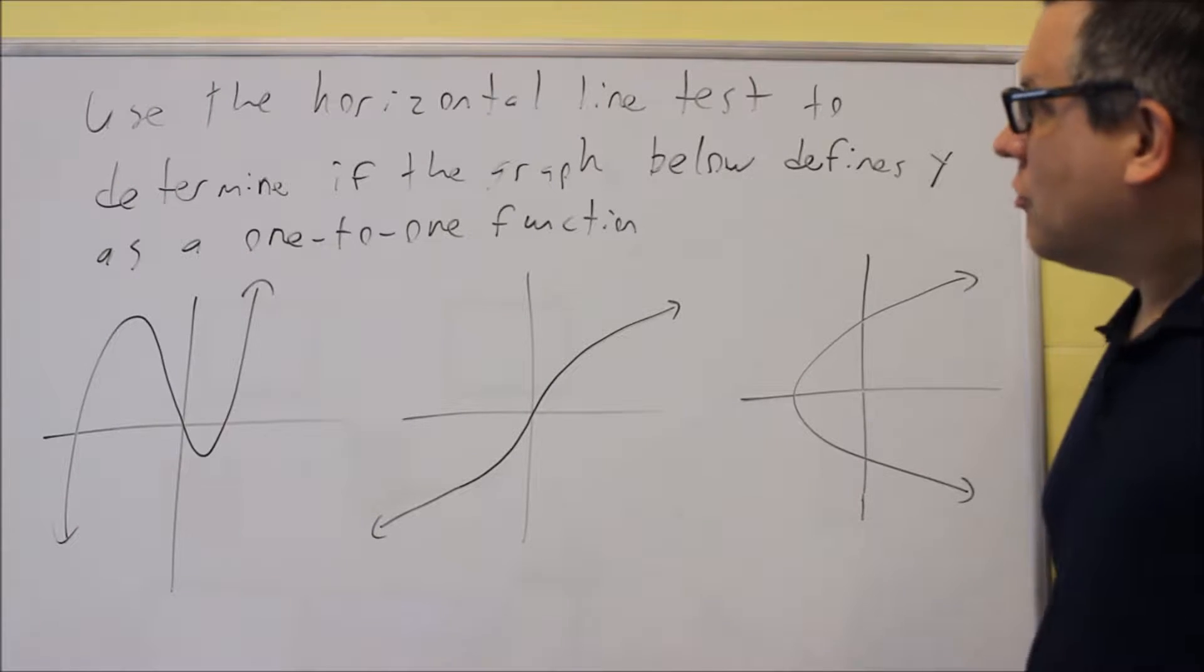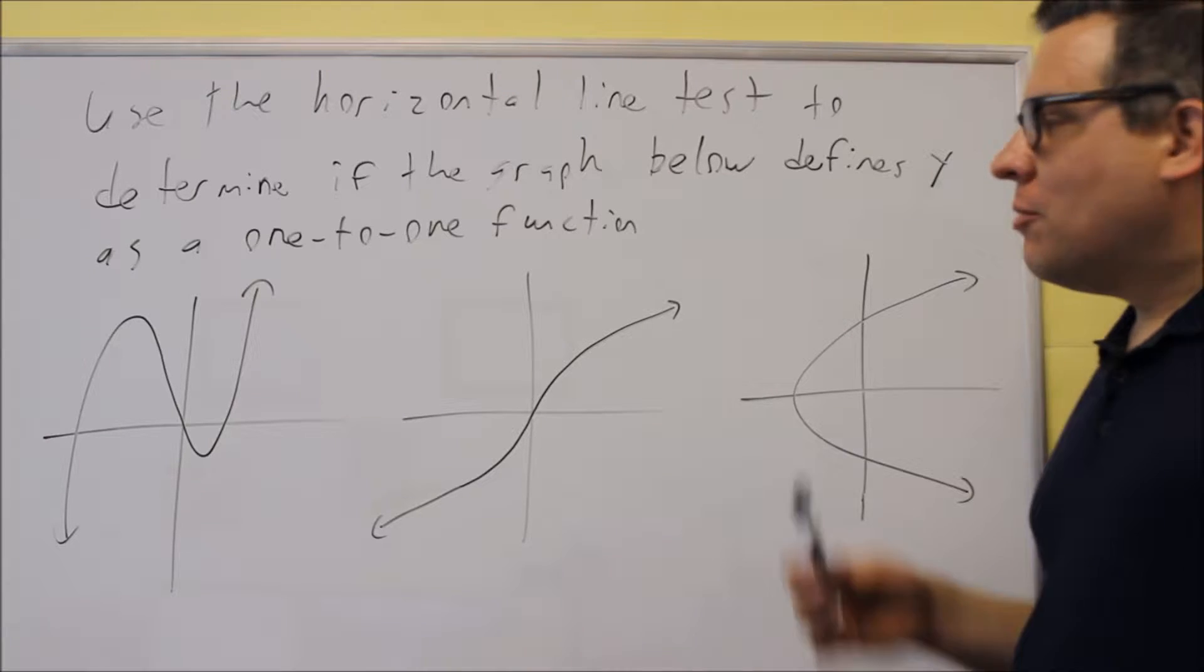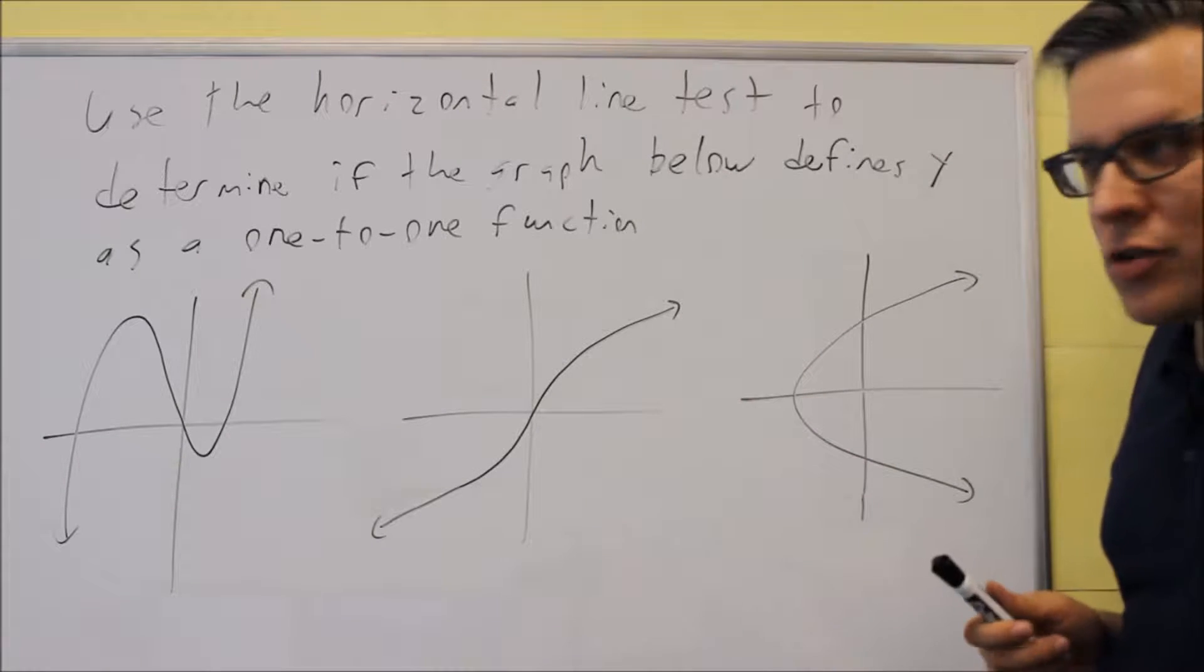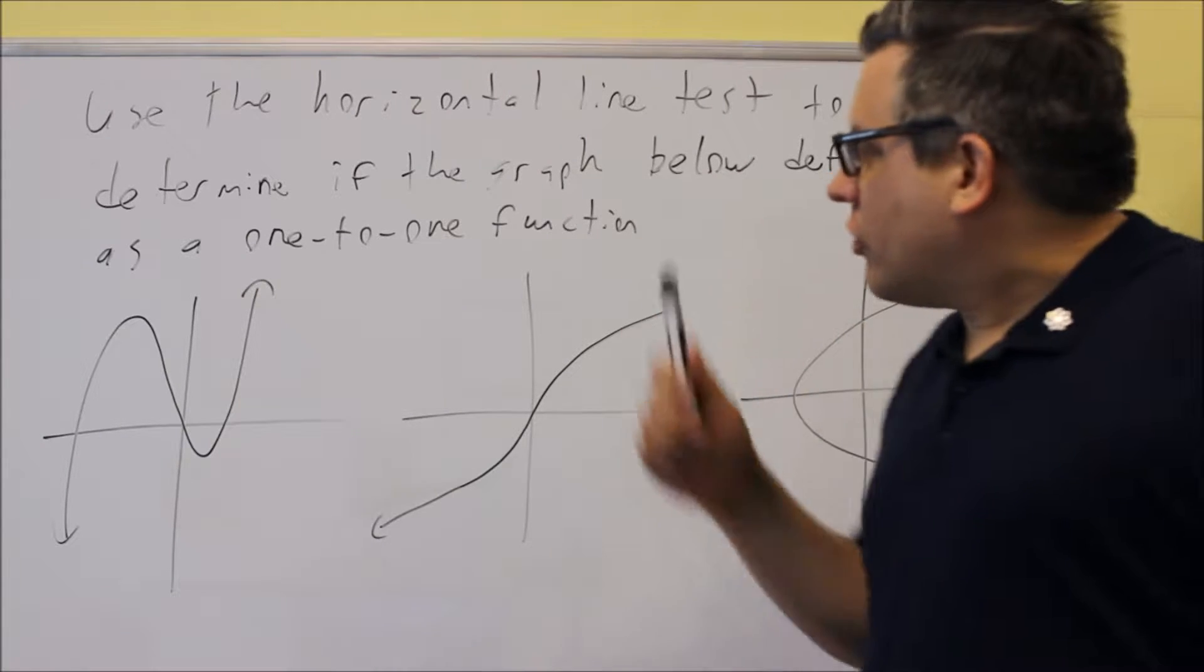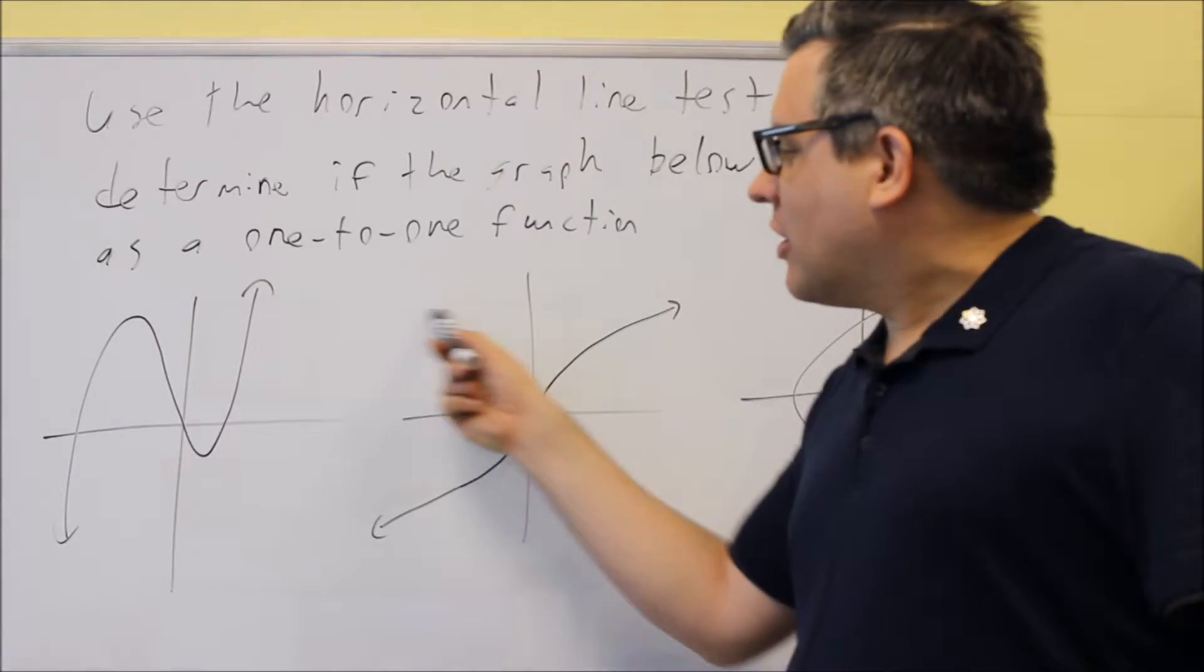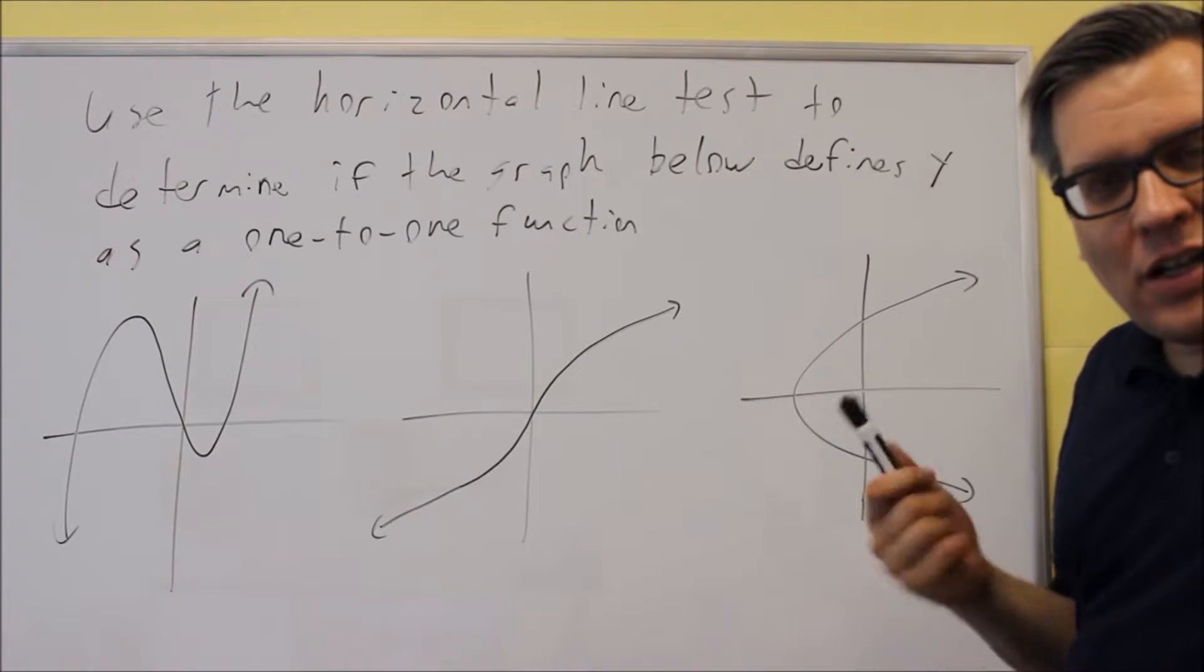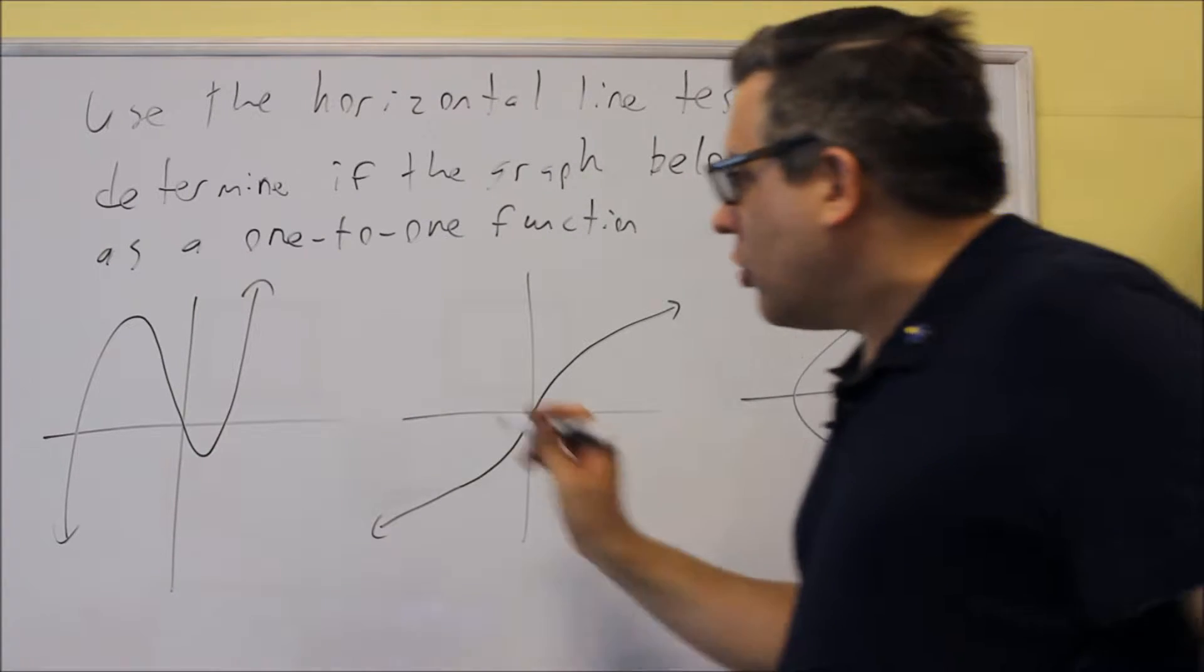Okay, so now a graph is given to us. We're going to use the horizontal line test to determine if the graph below defines y as a one-to-one function. So in order to do this, what we have to do is we need to pass a dotted line across, and if it hits the graph in more than one spot, it's not one-to-one.